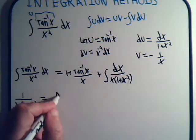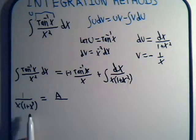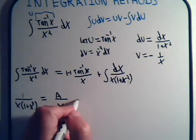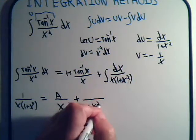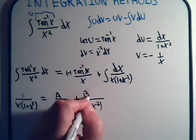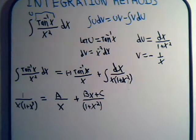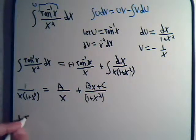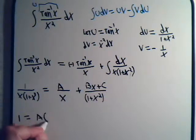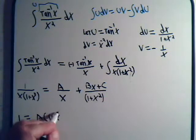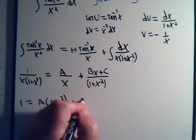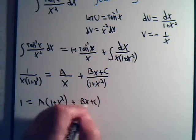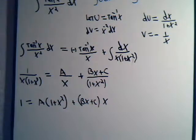We would say 1 over x times 1 plus x squared. That would just be a constant over x, a. And then 1 plus x squared. Now that's a quadratic form. So that would be plus 1 plus x squared. And this would be bx plus c. Remember how we handle the quadratic expressions. And multiply across by this.